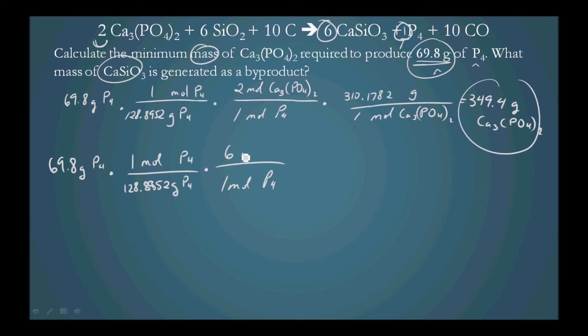And we want the mass, so we must convert 1 mole of CaSiO3 into grams CaSiO3. This compound has a mass of 116.1622 grams per mole. This gives us a value of 392.6 grams CaSiO3.